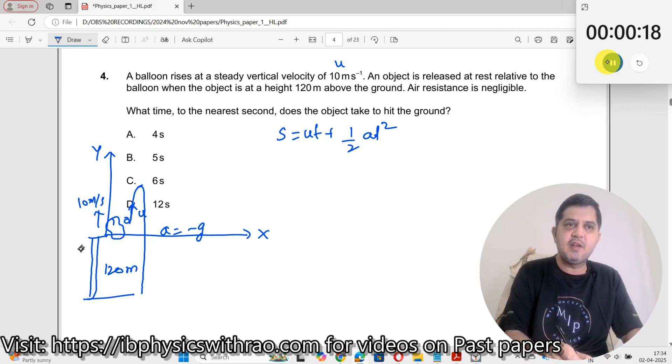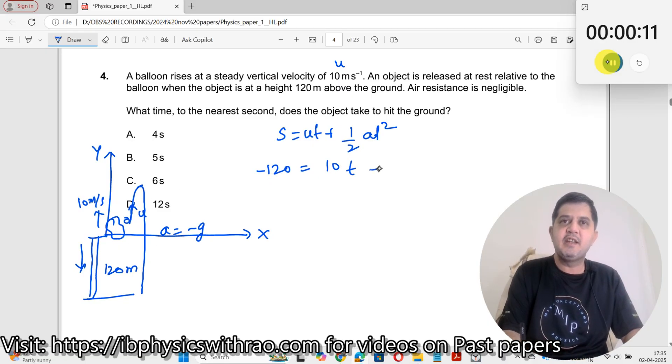What is s here? See, s is you are measuring it in this direction, so it will be minus 120. Minus 120 equals u. What is u? 10 and t, I do not know t, plus half into, what is the value of a? Minus 10, minus 10 into t squared.